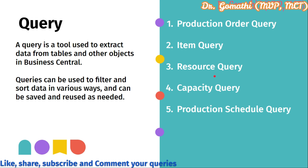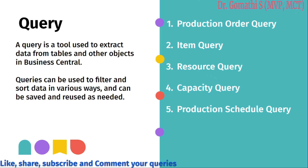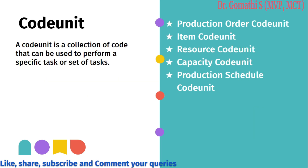The resource query provides information about resources used in production such as machines, equipment, and labor, including details like resource number, description, capacity, and availability. The capacity query provides information about resource capacity including utilization details. The production schedule query provides information about the production schedule including order number, item number, start and end date, and resource allocation. You can also add more queries such as bill of materials, work center, quality control, or routing queries.